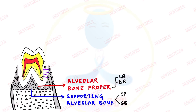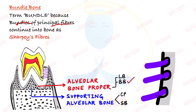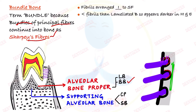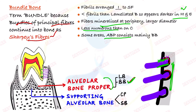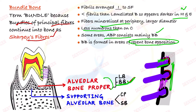Bundle bone is named because of the bundles of principal fibers which continue into it and become Sharpey's fibers. The fibrils in bundle bone are arranged perpendicular to the Sharpey's fibers and are fewer in number compared to lamellated bone. This part of alveolar bone proper appears darker under H&E stain sections because the fibers get mineralized at the periphery — they are of larger diameter and less numerous than on the cemental side of the PDL. Lines of rest — appearing as blue lines under the microscope — can also be seen where bone was recently formed.